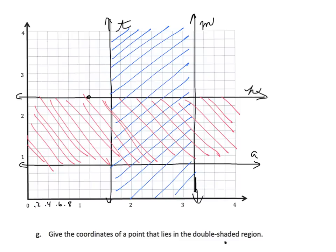Our final task G: give the coordinates of a point that lies within the double-shaded region. I need to choose any point in this overlapping area. I'll pick arbitrarily — 2 for x and 2 for y. That point intersects right there, and we can see it's in the double-shaded region. There are a number of possible answers, but as long as that point is within the double-shaded area, it's correct.